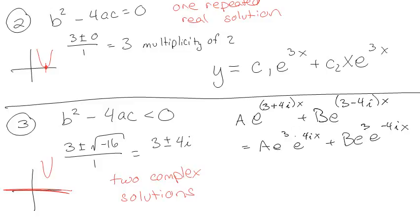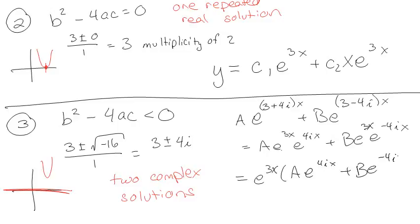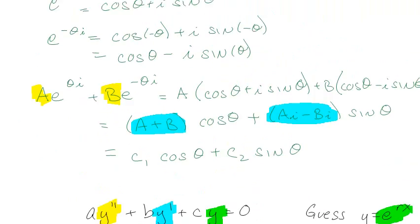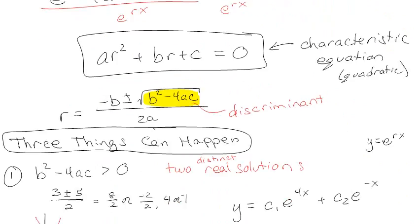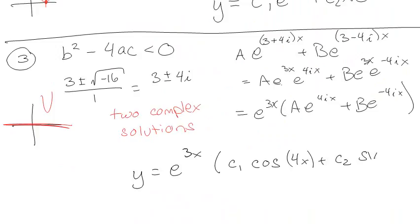So I have a·e^(3x)·e^(4ix) + b·e^(3x)·e^(−4ix). The constants a and b absorb the e^(3x) factor out front. Then using our aside — that a·e^(blah) + b·e^(−blah) gives cosine plus sine of the blah — we end up with y = e^(3x) · (c1·cos(4x) + c2·sin(4x)).